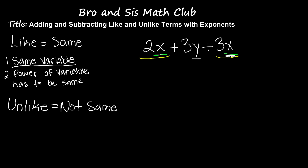Now to check if they're really like terms, we have to look at the two characteristics. They do have the same variable, but does the power of the variable match? In 2x, there's no written exponent, so we can make that a power of 1. Similarly, 3x also has a power of 1. So they are the same, and we can add these two.